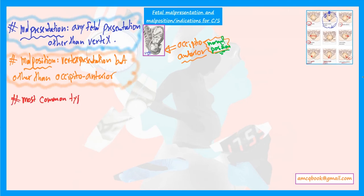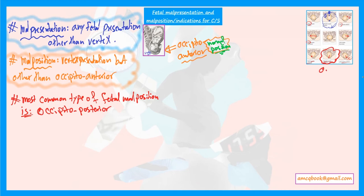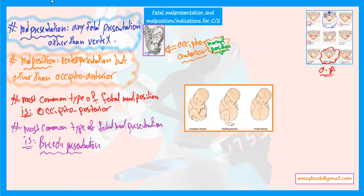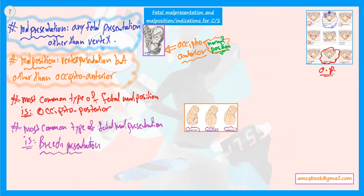The most common type of fetal malposition is occiput posterior. The most common type of fetal malpresentation is breech presentation. Looking at this picture, it represents breech presentation — either complete, incomplete, footling, frank breech, and other types.